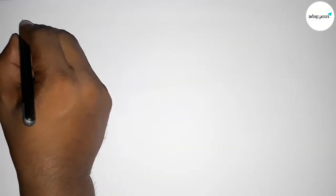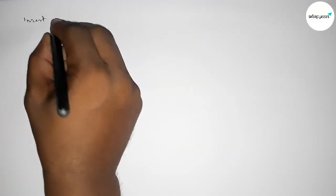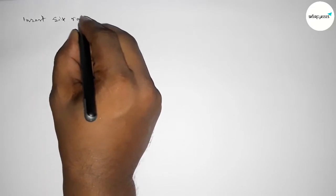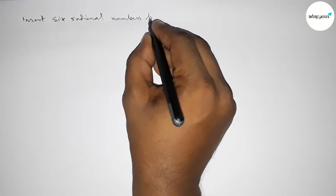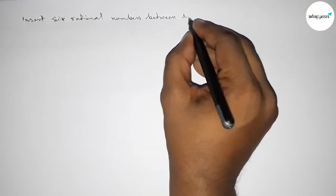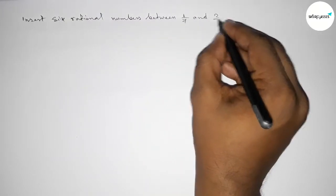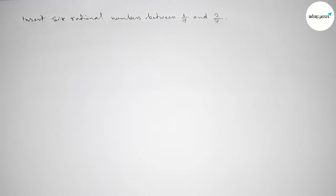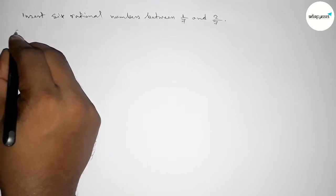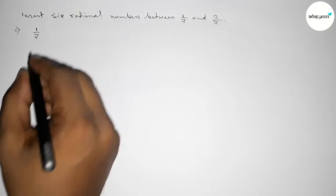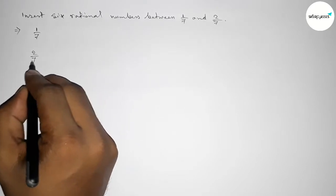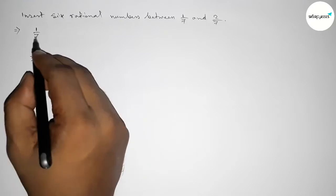Hi everyone, welcome to SI Share Classes. Today in this video we have to find six rational numbers between 1/7 and 2/7 in an easy way. So let's start the video. First of all, let's solve this problem. Here given two numbers, the first one is 1/7 and 2/7, and here the denominator of both are same.